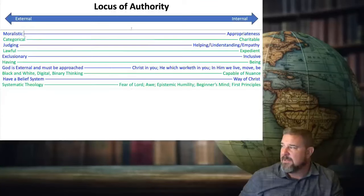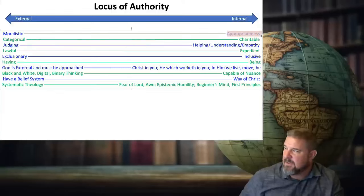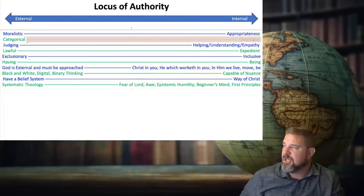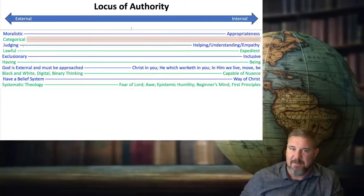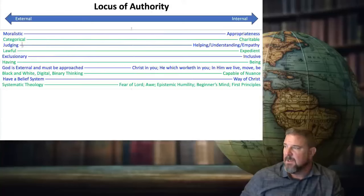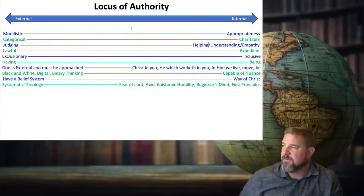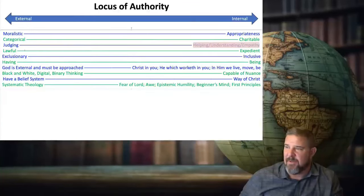So external is moralistic, internal is appropriateness. Think World War Z. External is categorical, internal is charitable. I have these in different colors, not because the colors mean anything, but just so that the eyes can tell the difference between the rows. External is more about judging. Internal locus of authority, it's more about helping, understanding, and having empathy.